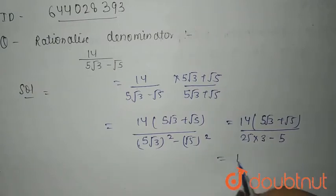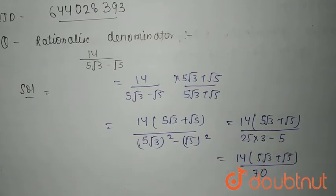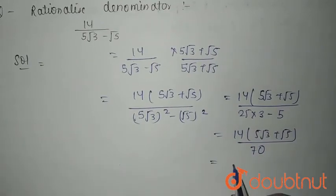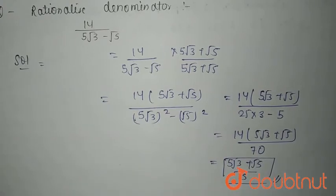that is 70. So 14 times 5 root 3 plus root 5 divided by 70 gives you 5 root 3 plus root 5 divided by 5, and this is your correct answer. Thank you.